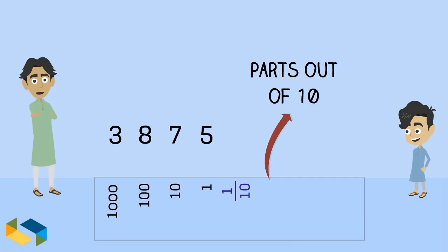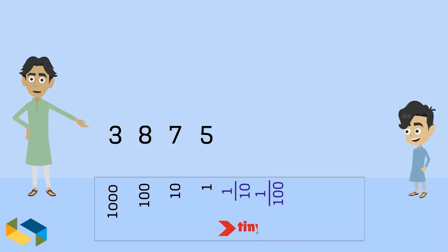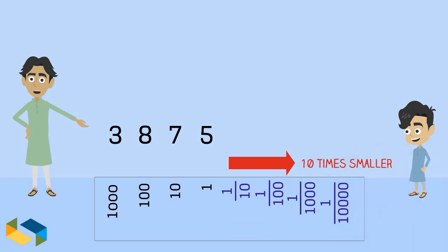For numbers that denote parts out of 100, we have a place value 1 hundredth. And as and when we require tinier and tinier parts of 1, we use thousand, ten thousand and so on. As we move further right, each position becomes 10 times smaller than the previous place value. Exactly opposite of how it was on the other end.